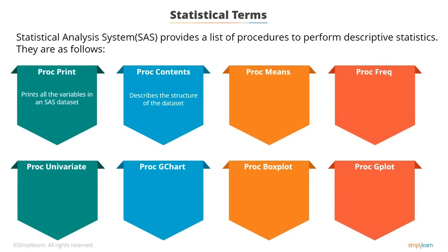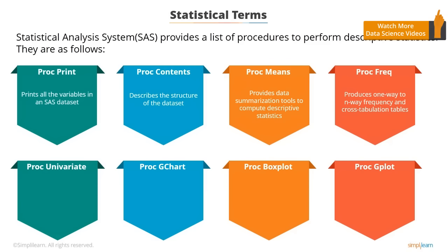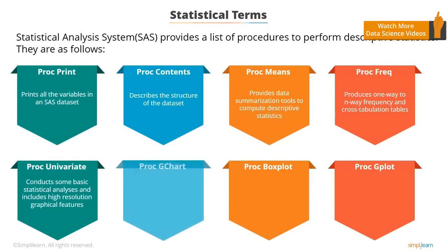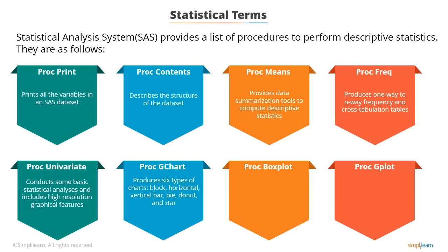PROC MEANS provides data summarization tools to compute descriptive statistics for variables across all observations and within groups of observations. PROC FREQUENCY produces one-way to n-way frequency and cross-tabulation tables. PROC UNIVARIATE goes beyond what PROC MEANS does and is useful in conducting basic statistical analyses, including high-resolution graphical features. PROC GCHART produces six types of charts: block charts, horizontal and vertical bar charts, pie, donut charts, and star charts.